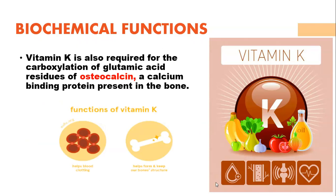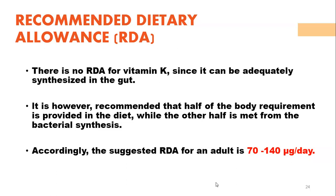Vitamin K is also required for the carboxylation of glutamic acid residues of osteocalcin, a calcium-binding protein present in the bones, helping to keep our bone structure functioning normally. Since Vitamin K is synthesized in the gut, there is no specific RDA, but the suggested intake for an adult is approximately 70 to 140 micrograms per day. Half of the body requirement is provided by the diet and the other half by bacterial synthesis in the gut.